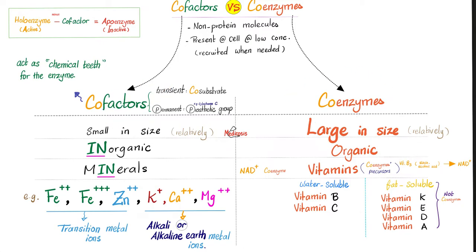Coenzymes versus cofactors. Coenzymes are relatively larger in size. Cofactors are smaller. When the cofactor is present in a transient fashion, we call it co-substrate. But if it's permanent, it's called a prosthetic group, like the famous cytochrome C. Cofactors are usually inorganic. Coenzymes are usually organic. Cofactors are the minerals. Coenzymes are the vitamins.